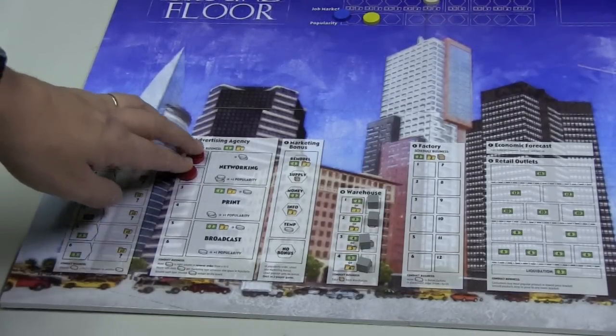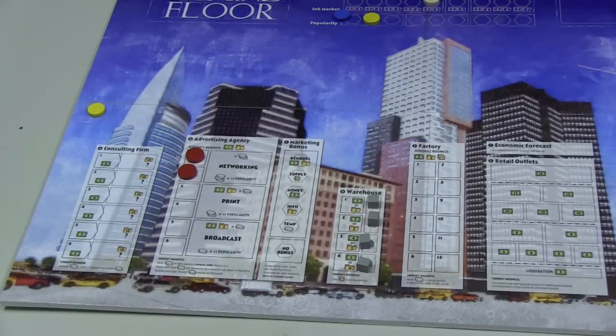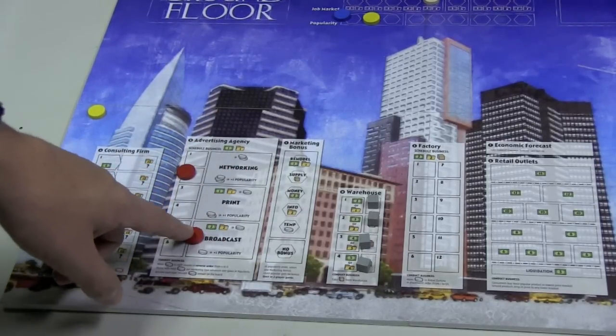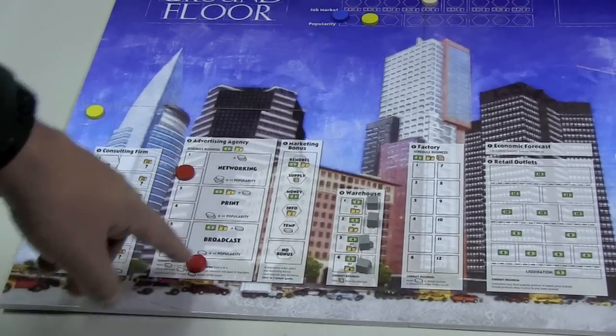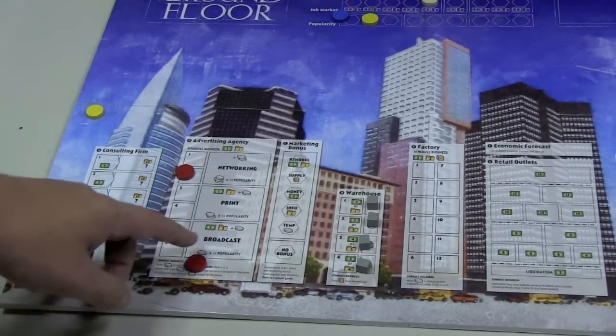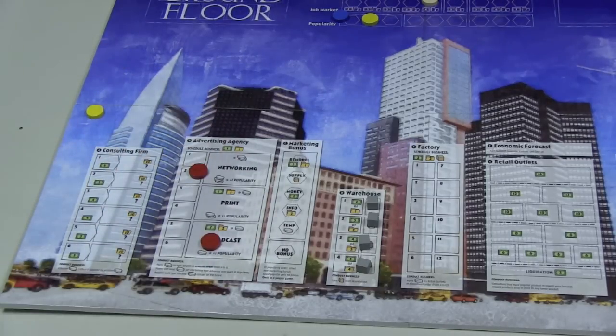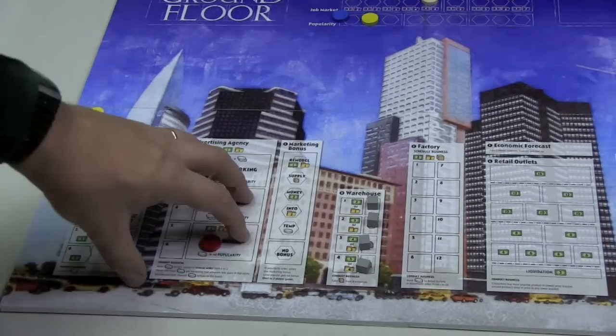Over here is the advertising agent, which costs $1 and one information to put them in there. Once you put these discs in here, you'll be able to convert them to networking, print, or broadcast. Broadcasts cost even more money, but can provide you lots of popularity. While network is the cheapest and the easiest to do, but it doesn't provide you with nearly as much popularity.